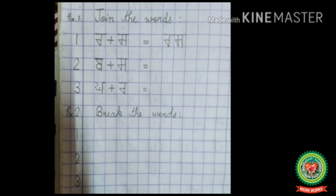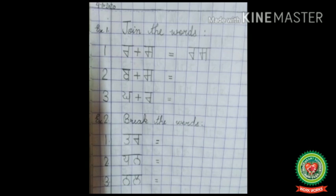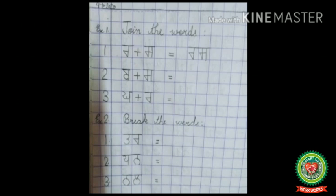Leave the next line and put number two, similarly leave the next line and put number three — so set three numbers under Exercise 2. Come to the first number, after leaving one box write down 'tatta-rara' (tar), then leave one box and put the equals sign. In front of number two, write 'tadha-nannat' (an), then leave one box and put the equals sign. In front of number three, after leaving one box write the word, then leave one box and put the equals sign.